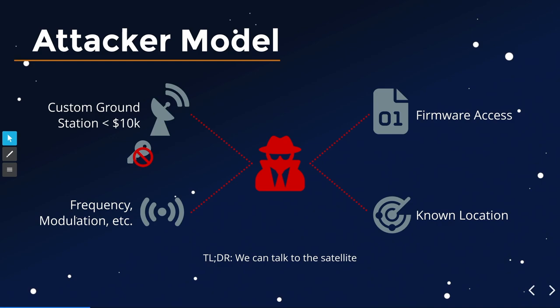Our attacker model assumes someone with a ground station that most people here could purchase online. They know exactly where the satellite is, they know the exact frequency and modulation — a fair assumption since many frequencies have to be published for FCC grants, and there aren't that many modulation types. The location is known — you can look it up for any satellite in space. A harder assumption is access to the actual firmware, which I'll explain how we obtained.